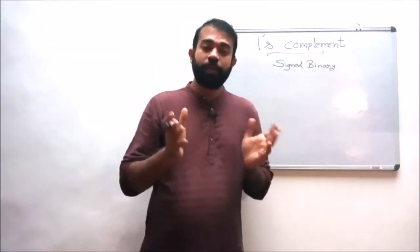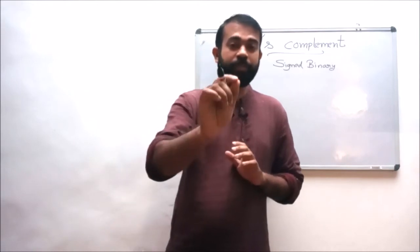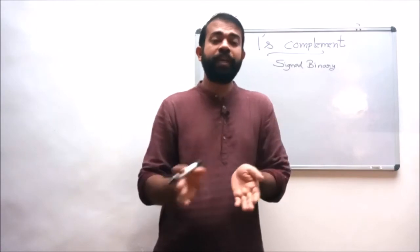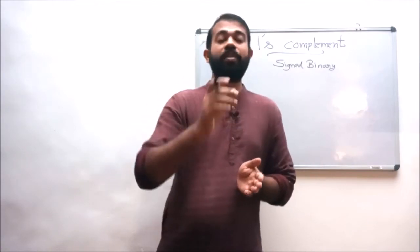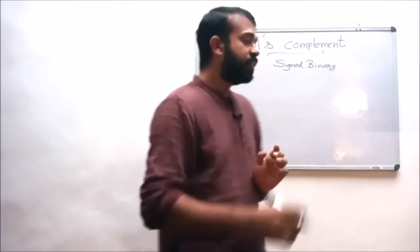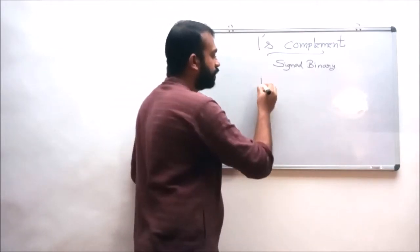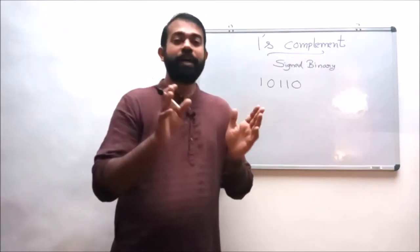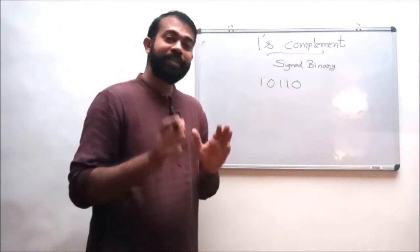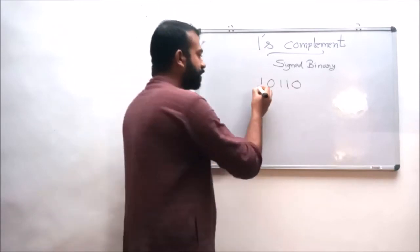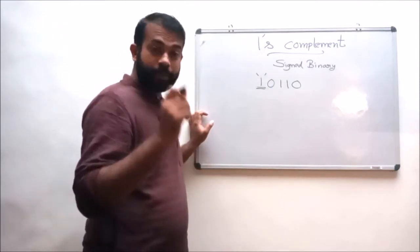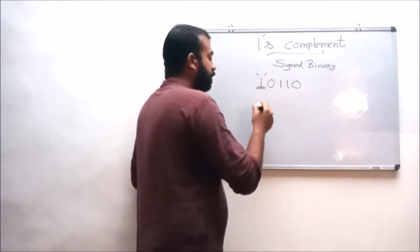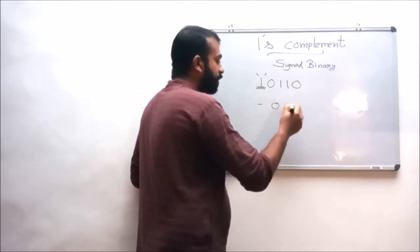If we are considering a signed binary number, the point to remember is that the sign bit or the MSB should not be complemented in one's complement representation. For example, the given number is 1 0 1 1 0. In signed binary representation, the first bit or the MSB is always the sign bit. Since the MSB is 1, this number is a negative number, that is minus 0 1 1 0.